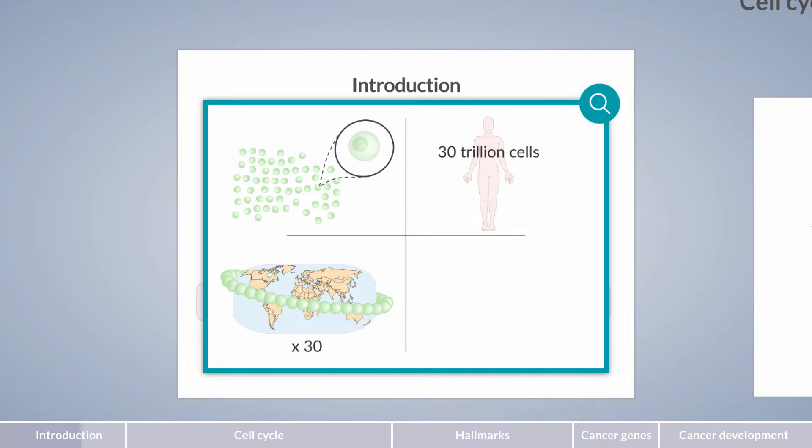However, this amount represents the number of cells present at any given time. As cells age, they are continually replaced. Within the average human lifespan, the body produces approximately 1,000 times more cells than the number of cells at any given time.